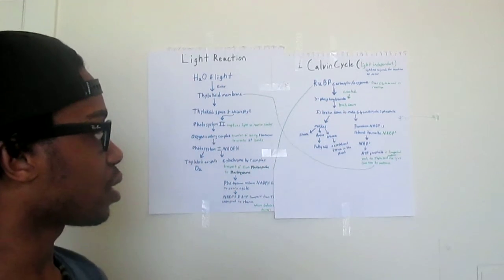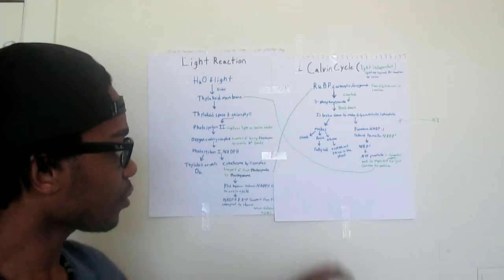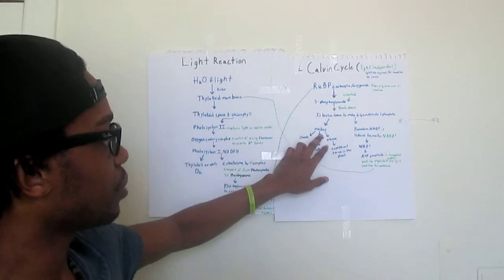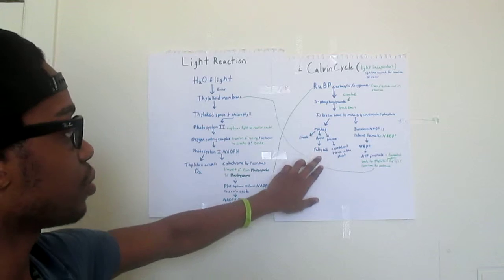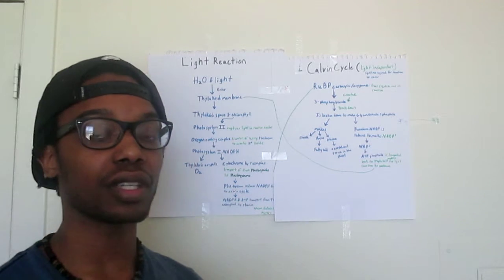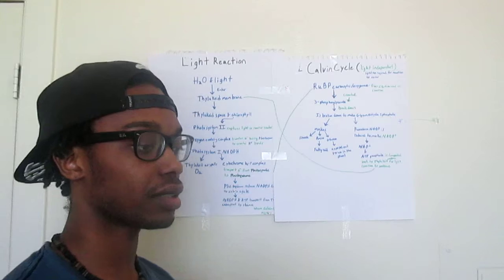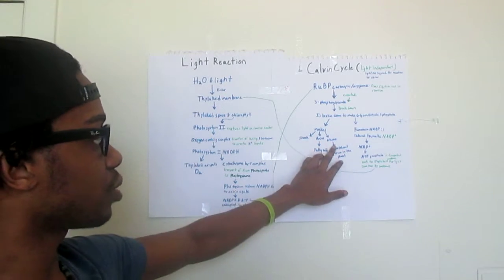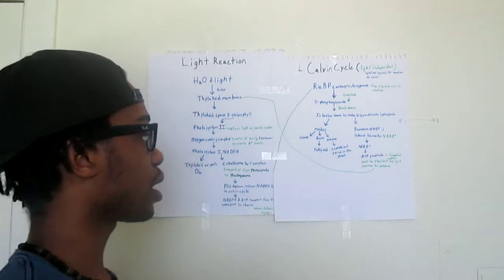After that has occurred, it makes starch and amine, which is fatty acid. The starch and amine will occur inside of the cell, and the glucose is exported outside of the cell to be used in the plant.